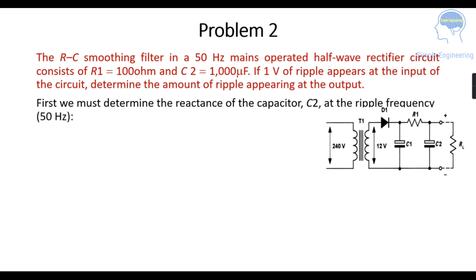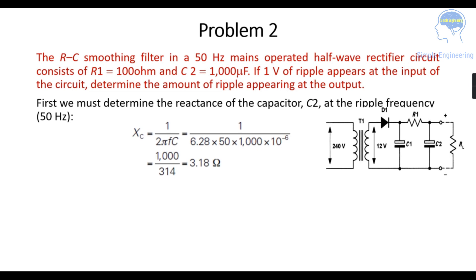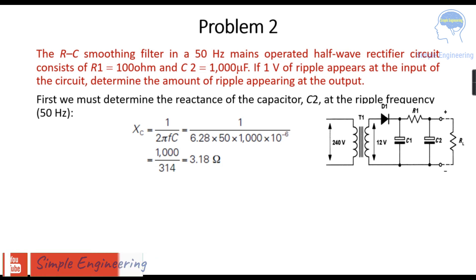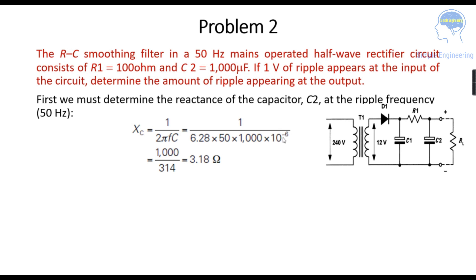We have to first determine the reactance of capacitance C2 at a ripple frequency of 50 Hz. XC, the reactance of the capacitance, is equal to 1 divided by 2πfC, where frequency is 50 Hz and capacitance is 1000 microfarad (10 to the power minus 6). So XC equals 1 divided by 2 × 3.14 × 50 × 1000 × 10⁻⁶. After solving this we get XC as 3.18 ohms.